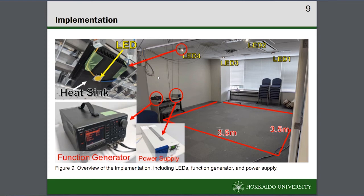This is the implementation of our experiment. We conducted our experiment in a 3.5 times 3.5 square meter area with 4 LEDs mounted on a heat sink on the ceiling. A 5V signal from a function generator was amplified to 39.60V using a power driver and power supply.